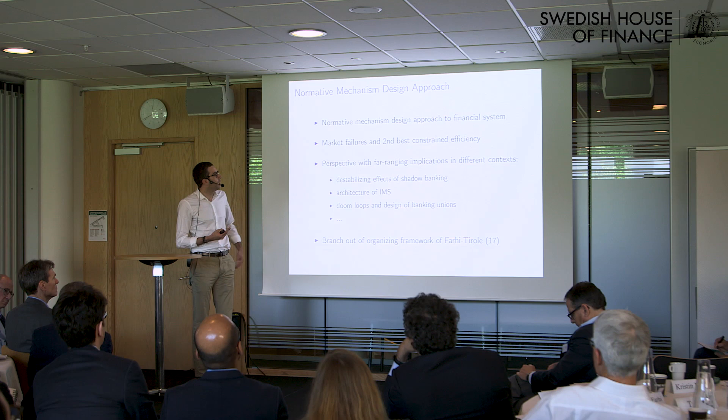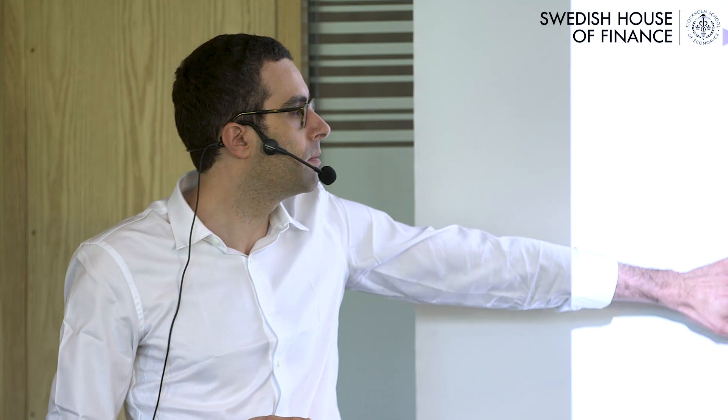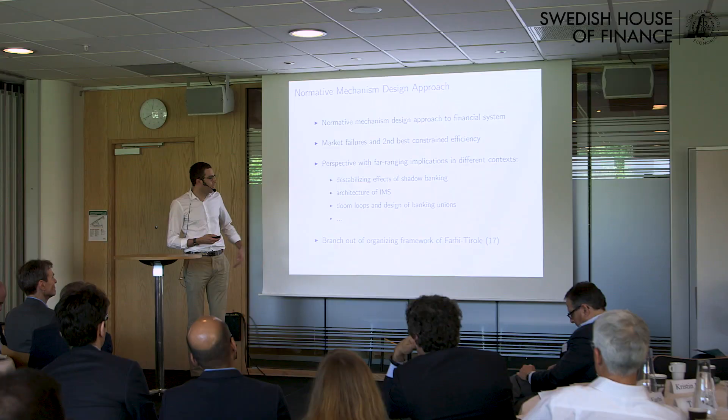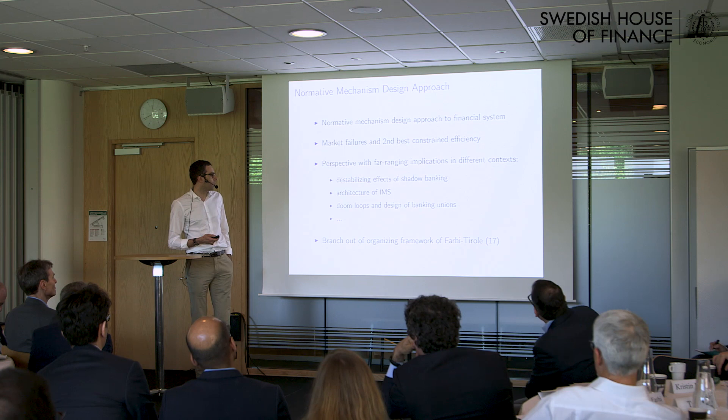Those examples include the destabilizing effects of shadow banking, the architecture of the international monetary system, doom loops between banks and sovereigns, and the design of banking unions. I'll use an organizing framework developed with Jean Tirole in a recent paper.